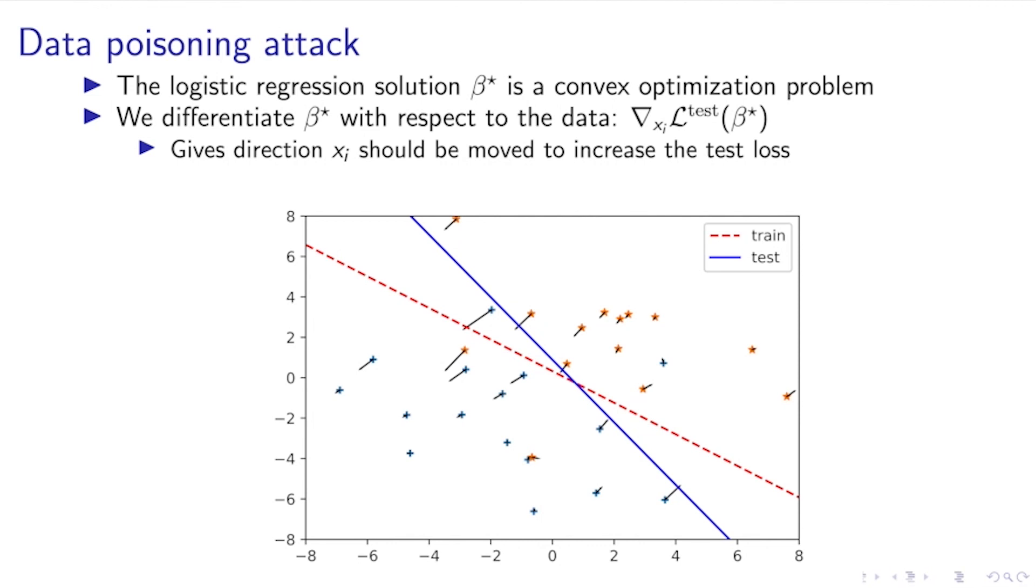In this plot on the screen, we're showing two datasets that are almost linearly separable. We're showing the adversarially perturbed hyperplane for the training and tests, and we're also showing the derivatives of the likelihood with respect to the data points, showing how moving the data points would best hurt the test loss.